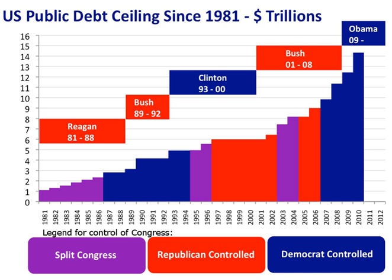Debts incurred during the American Revolutionary War and under the Articles of Confederation led to the first yearly report on the amount of the debt — $75,463,476.52 — on January 1, 1791. Every president since Herbert Hoover has added to the national debt expressed in absolute dollars.